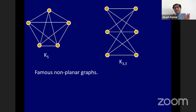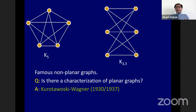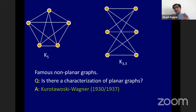You might be wondering whether there is a characterization of planar graphs — a theorem that tells you when a graph is planar. It turns out Kuratowski and Wagner already answered this question back in the 1930s. Their answer said something like: if a graph contains, for some appropriate notion of containment, the two graphs K5 and K_{3,3}, then your graph cannot conceivably be planar. This notion of containment goes by the name of graph minors.